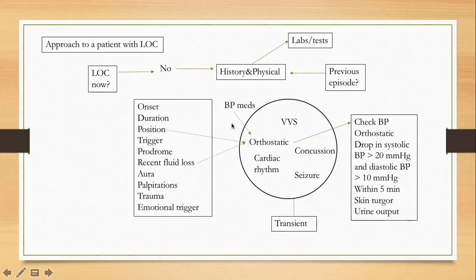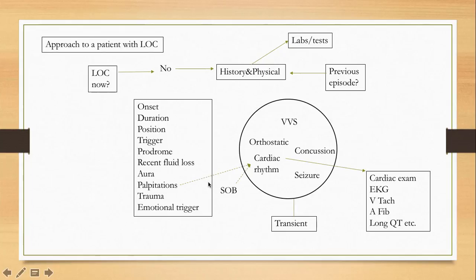If it was orthostatic hypotension based on your history, you will check the blood pressure and review blood pressure medications. Do orthostatics — a drop in systolic blood pressure of more than 20 and diastolic of more than 10 within five minutes of standing will confirm the diagnosis. Check skin turgor; these patients will have low urine output or high urine specific gravity.